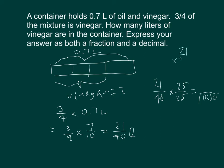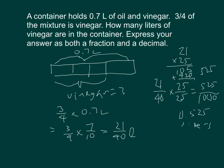Working it out: 5 times 1 is 5, 5 times 2 is 10, place a zero, 2 times 1 is 2, 2 times 2 is 4, and adding those together gives 525. So it's 525 thousandths written as a decimal — 0.525 liters of vinegar in the container. Always express your answer clearly.